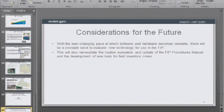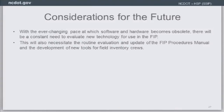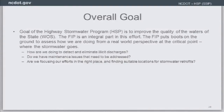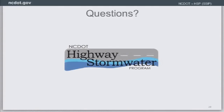Considerations for the future include keeping up with evolving software and technology within DOT's budget, evaluating all procedures and collection manuals, and the overall goal of improving the quality of waters of the state — finding and eliminating illicit discharges, identifying all outfalls that may carry road pollutants such as oil, and addressing maintenance issues, illicit discharges, and stormwater retrofits around streams.